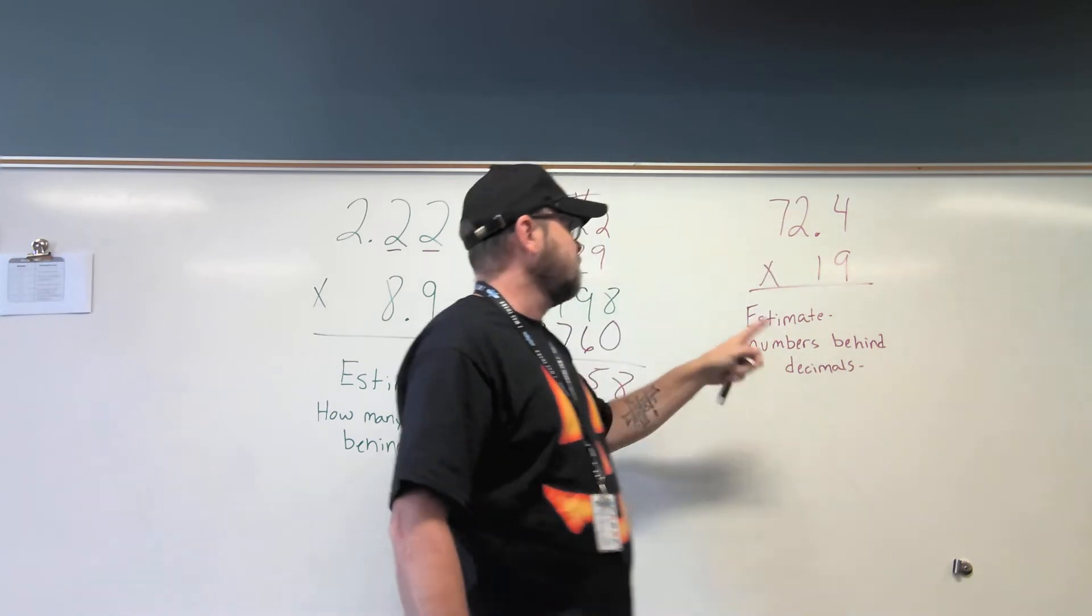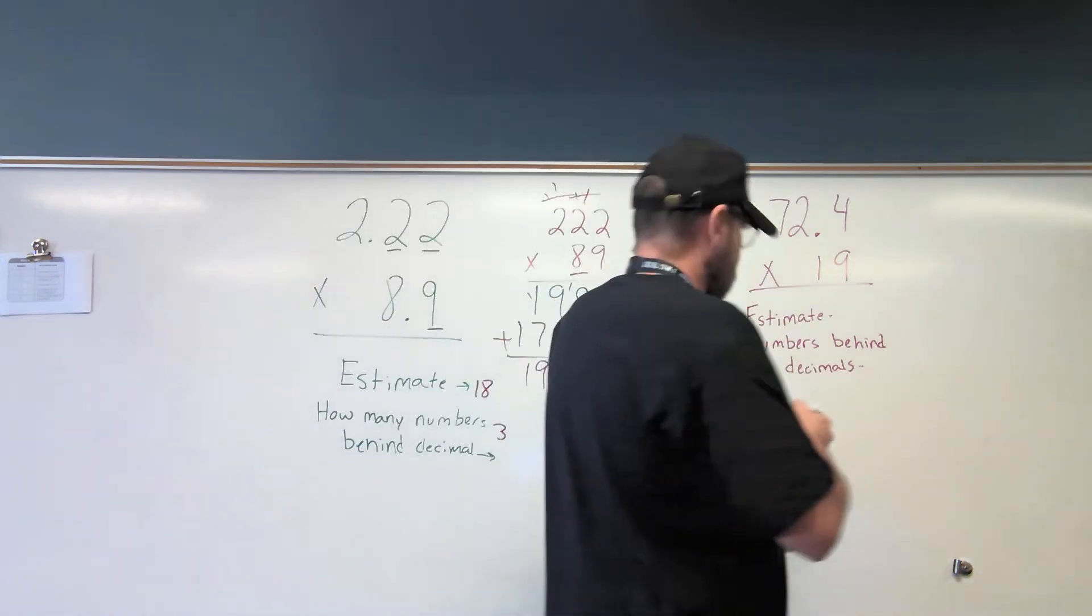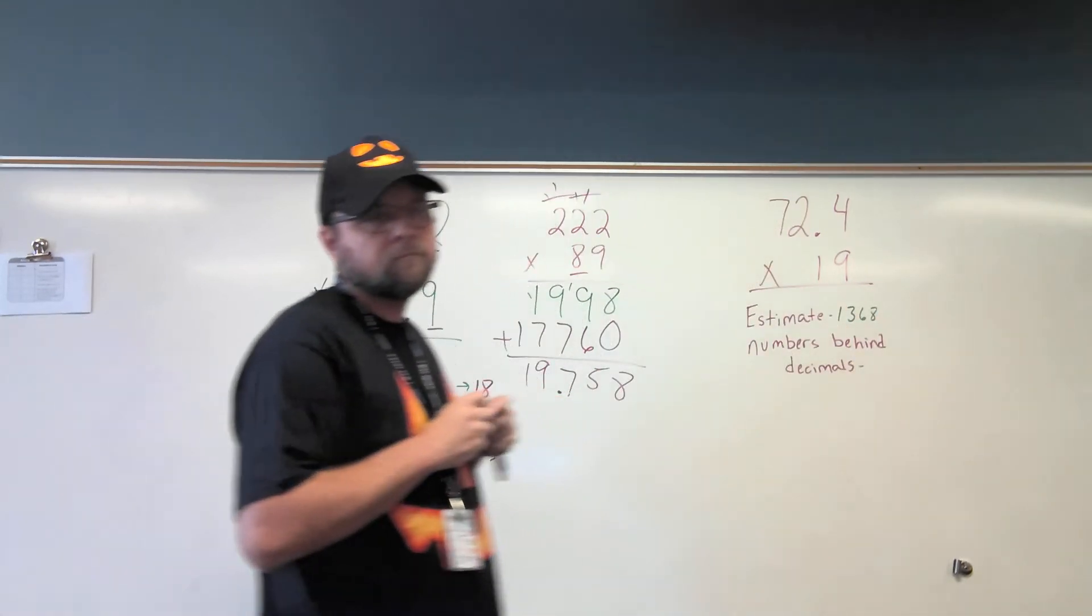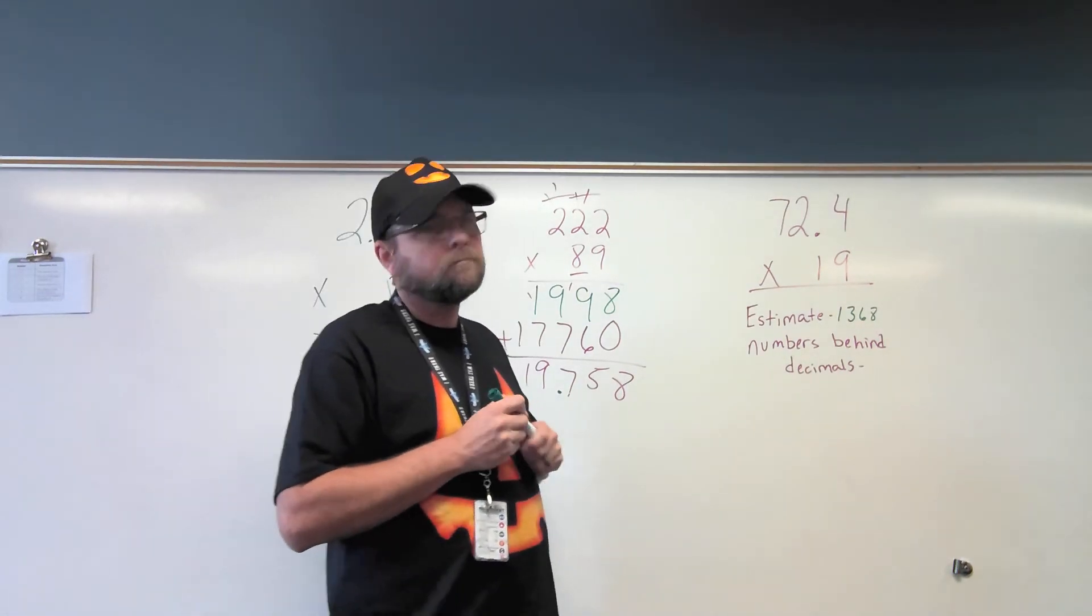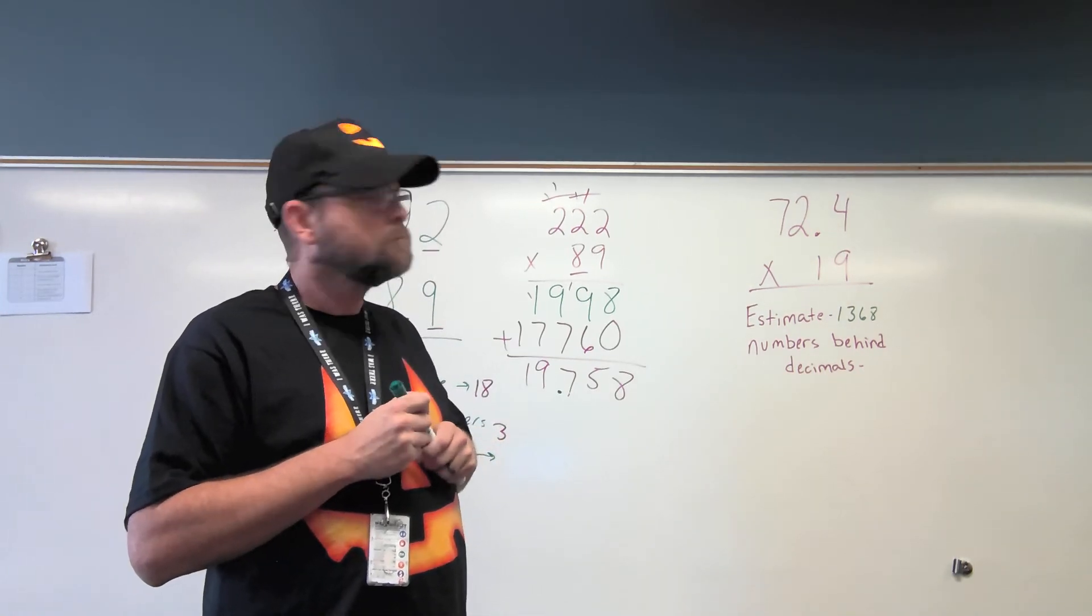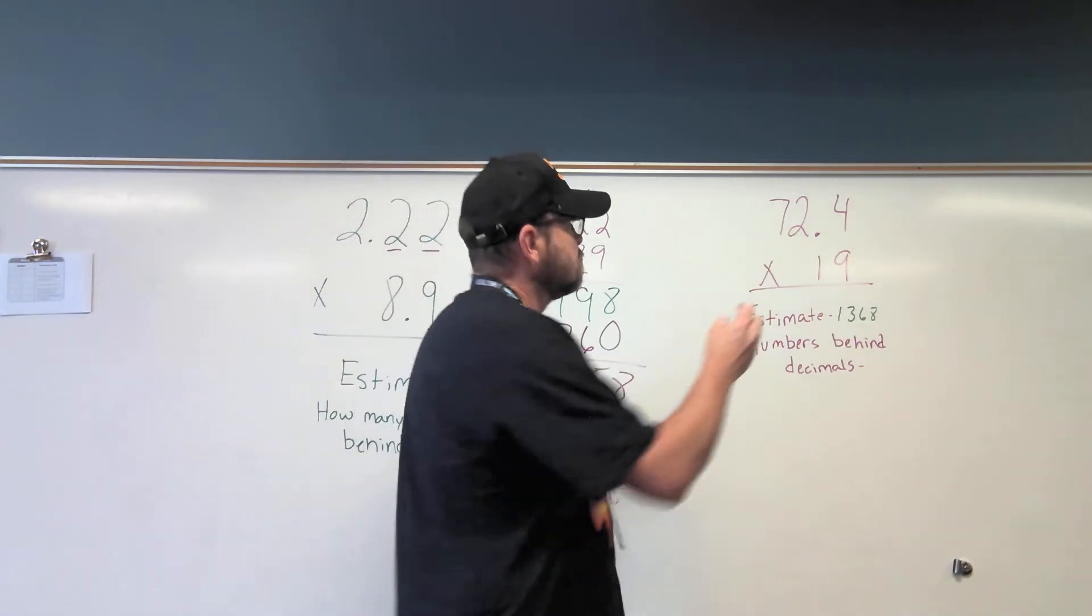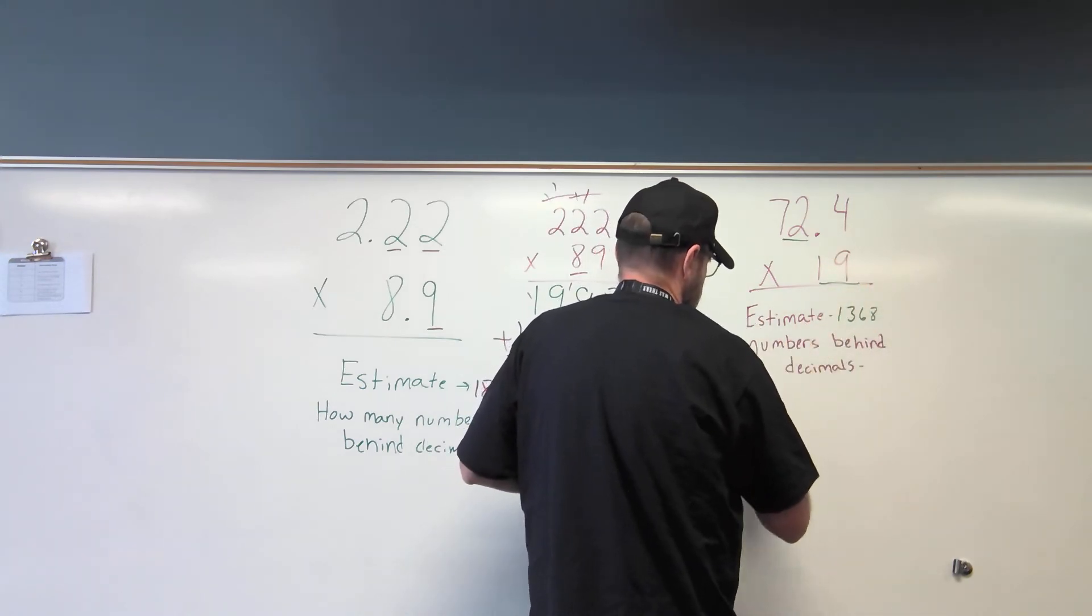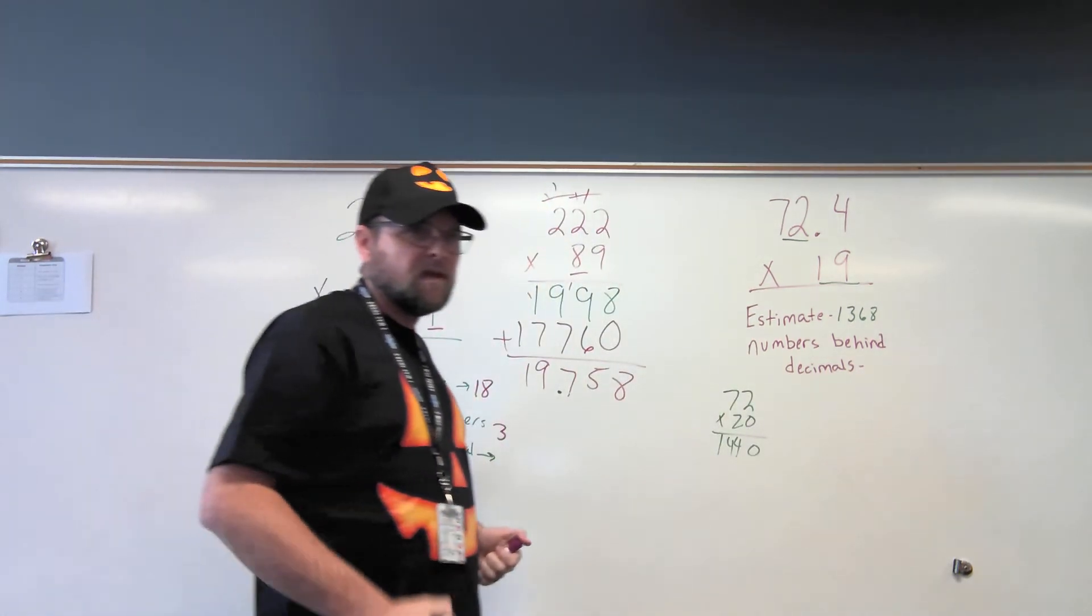72 and 4 tenths times 19. Kaylee, what was your estimate? 1,368. 1,368. How did you get that? So, I looked at the 72.4 and I asked to multiply the whole number. So, I looked at the 19 and there's no decimal point. So, I'm going to multiply it fast. You multiplied 72 times 19? Yeah. Because we're just multiplying the whole numbers. I would make it 72 times 20. Zero for... So, 1,440, 1,368. Good. Okay.